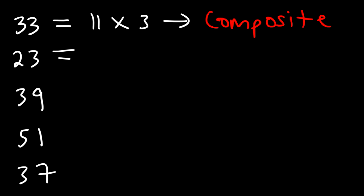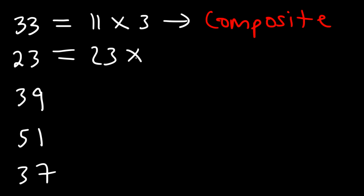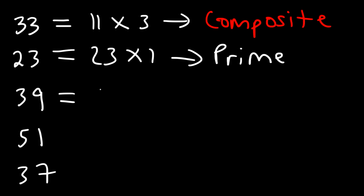Now 23 — you can't find two numbers that multiply to 23. 2 doesn't go into it; it's not even. 23 is not a multiple of 3. It doesn't end in 0 or 5, so it's not a multiple of 5. And 7 doesn't go into 23. Therefore the only factors are 23 and 1, which means 23 is a prime number. Now 39 is 13 times 3, which means it is a composite number.